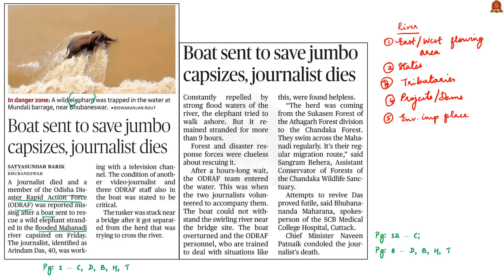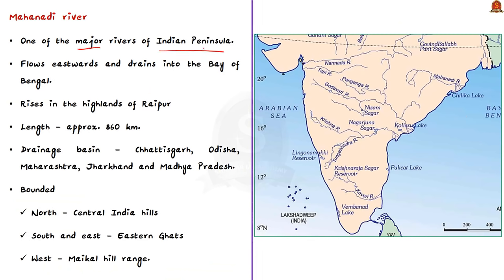Mahanadi is one of the major rivers of peninsular India. According to NCERT, the Mahanadi river rises in the highlands near Sihawa in the Raipur district of Chhattisgarh. It flows through Odisha to reach the Bay of Bengal, forming a delta before entering it. Therefore, this is an east-flowing river draining into the Bay of Bengal.